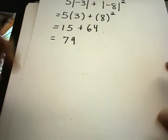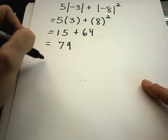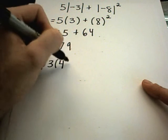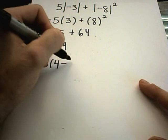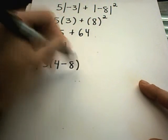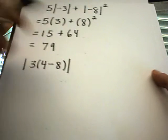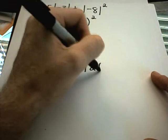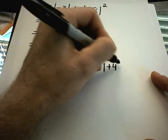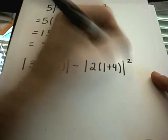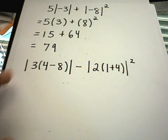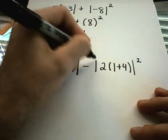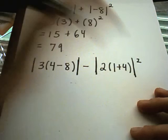Maybe one more absolute value problem here. Suppose I have 3 times 4 minus 8, the absolute value of that, minus 2 times 1 plus 4, absolute value of that, all squared. Well, I'm going to simplify everything down inside the absolute value to begin with. And then just go from there.